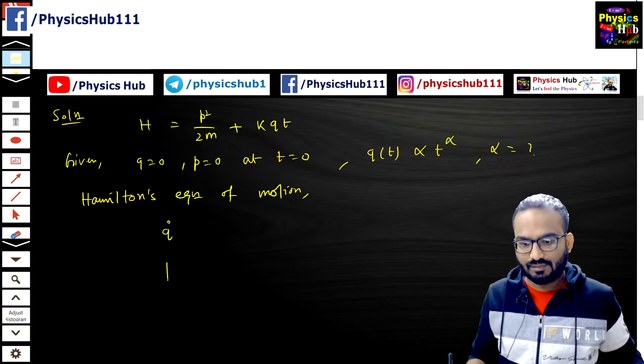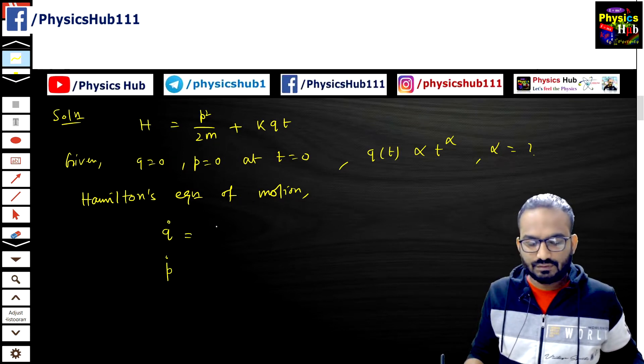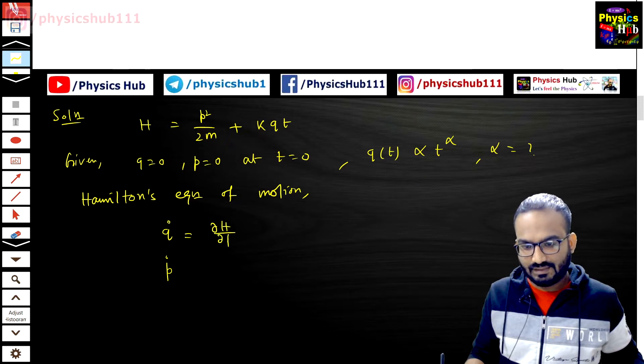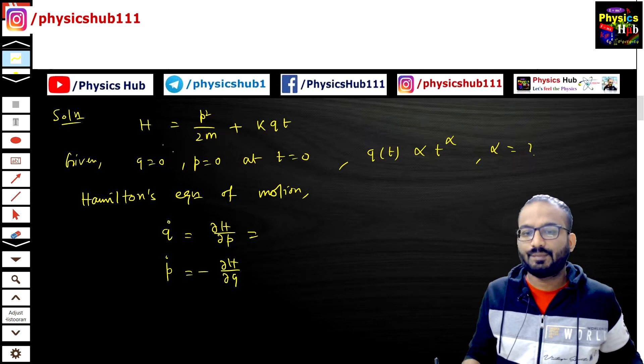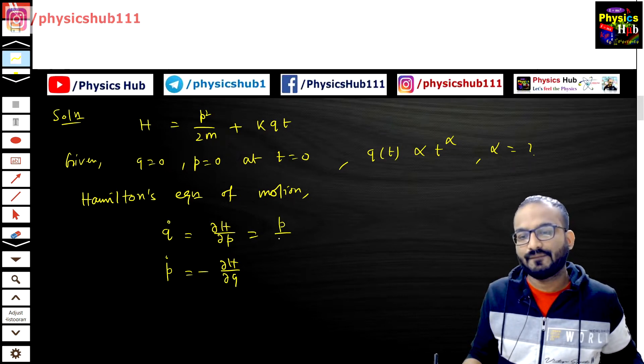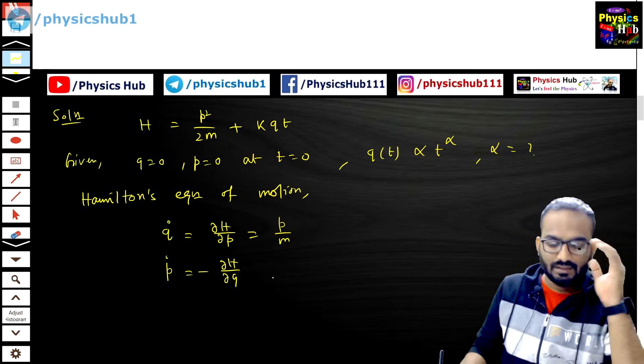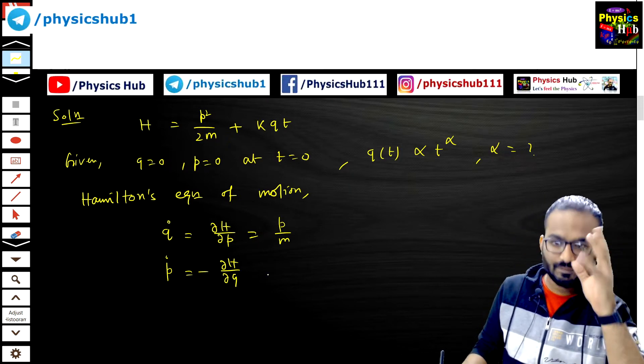What are the Hamiltonian's equation of motion? We can write q dot equals del H by del p, and p dot equals minus del H by del q. H is given, so q dot equals del H by del p, which is p by m, and p dot equals minus del H by del q equals minus kt.